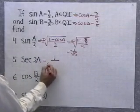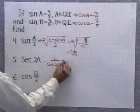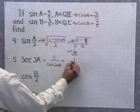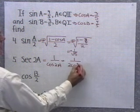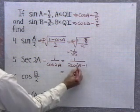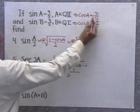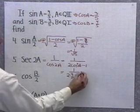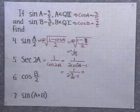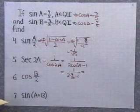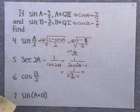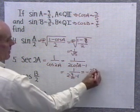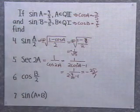For secant 2a, I'll write that as 1 over cosine 2a. I have three formulas for cosine 2a; let's use 2 cosine squared a minus 1. That's 2 times cosine a squared — cosine a is negative 3 fifths, so that's 9 twenty-fifths — minus 1. That gives 18 twenty-fifths minus 25 twenty-fifths, which is negative 7 twenty-fifths. Taking 1 over that gives secant 2a equals negative 25 sevenths.